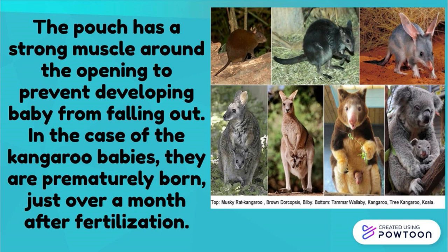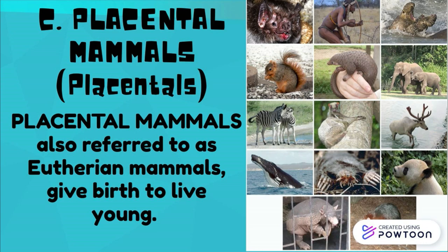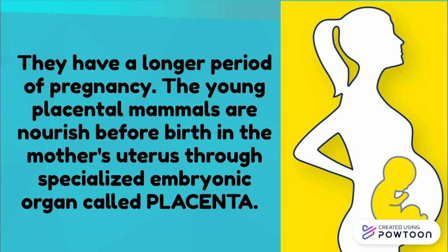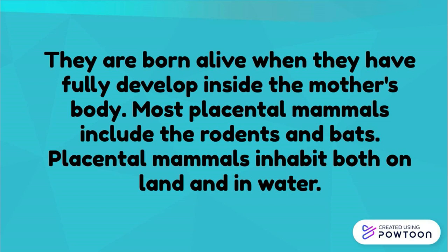Placental mammals, also referred to as eutherian mammals, give birth to live young. They include diverse forms such as elephants, shrews, dolphins, giraffes, dogs, cats, sheep, cattle, horses, and humans. They have a longer period of pregnancy. The young placental mammals are nourished before birth in the mother's uterus through a specialized embryonic organ called the placenta. They are born alive when fully developed inside the mother's body. Most placental mammals include rodents and bats, and they inhabit both land and water.